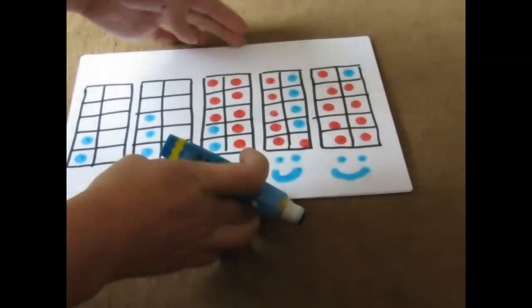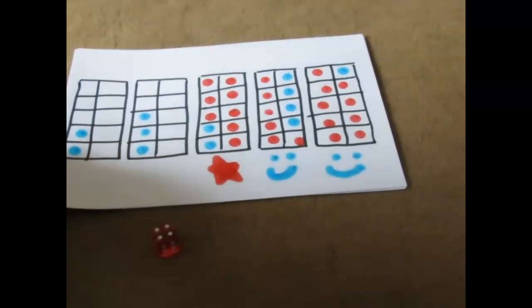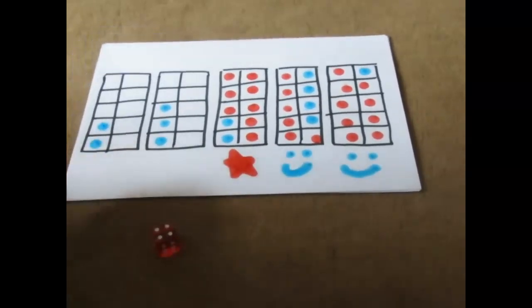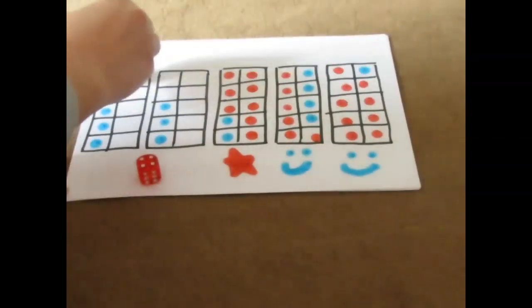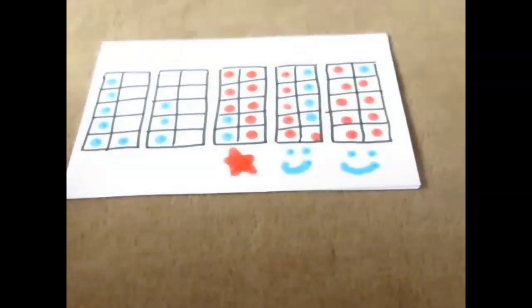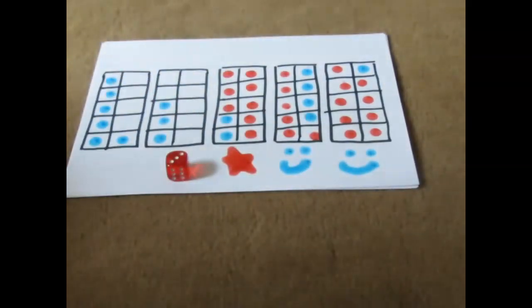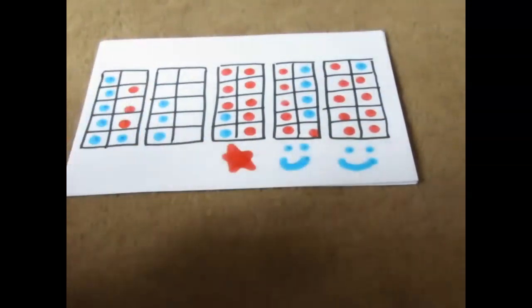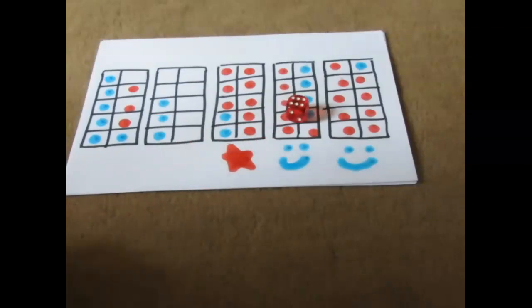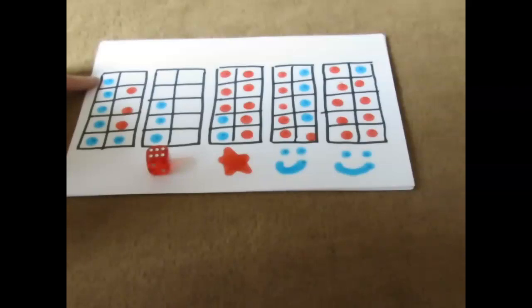So reds have won that one. Let's see who's going to win the last two. So I have rolled a four. I'm going to do this one. One, two, three, four. You have rolled a three. Which one are you going to put it in? Okay. And I am going to roll. I have rolled a six. So can I put this one? No. No. Why not?